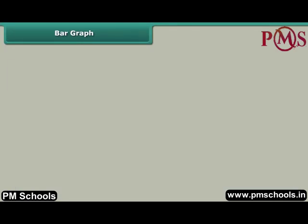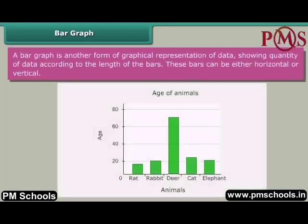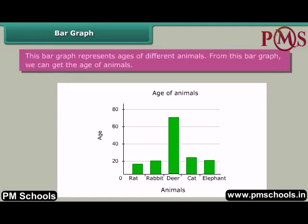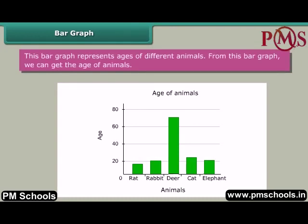Bar graph. A bar graph is another form of graphical representation of data showing the quantity of data according to the length of the bars. These bars can be either horizontal or vertical. This bar graph represents ages of different animals, and from it we can get the age of those animals.